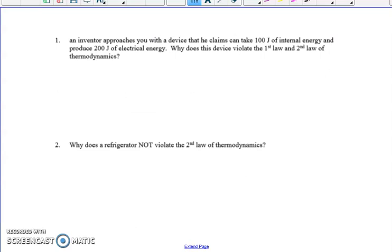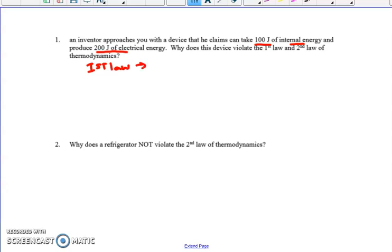All right, so let's look at some examples in a few minutes here. I'm not going to do them all. I'm going to ask you to try to do some on your own, but this is, I think, very abstract. So an inventor approaches you with a device that claims you can take 100 joules of internal energy and produce 200 joules of electrical energy. Why does this device violate the first and second law of thermodynamics? So I think the first one is easy. For the first law, why there's a violation, and that's simply we get more out than we put in. In other words, our output is the 200 joules, that's the electrical energy, and we're only inputting 100 joules. So that's pretty straightforward.